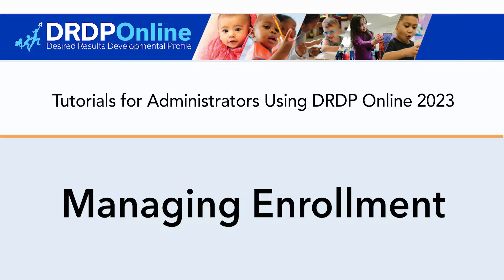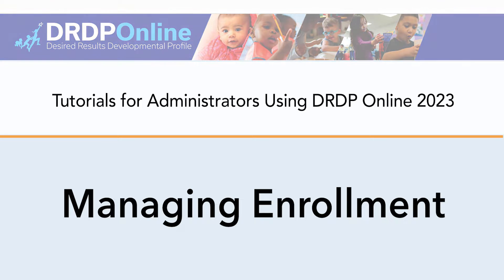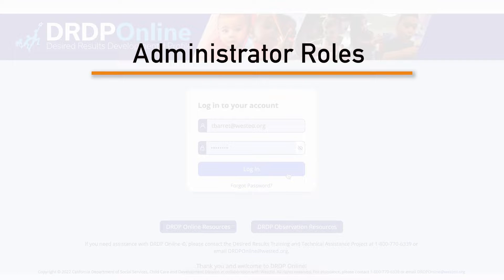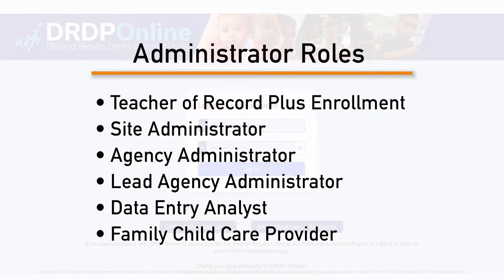Managing enrollment includes transferring children, re-enrolling children, and withdrawing children. It's important to note that to do any of these, you must have an administrative role, such as teacher of record plus enrollment, site administrator, agency administrator, lead agency administrator, data entry analyst, and family child care provider.